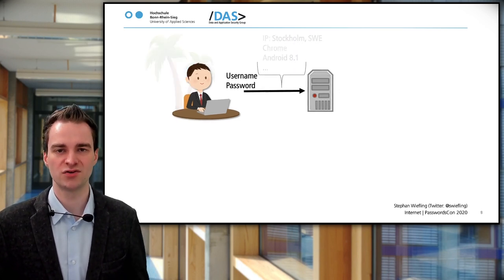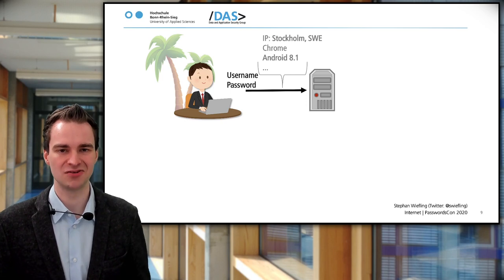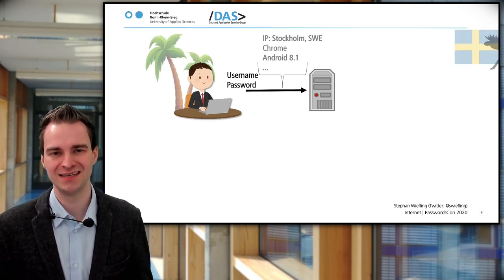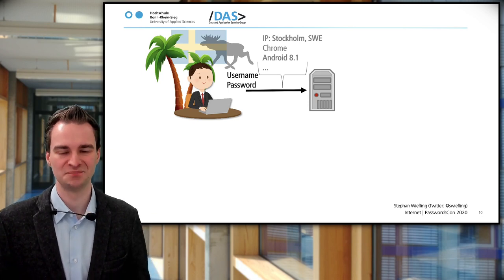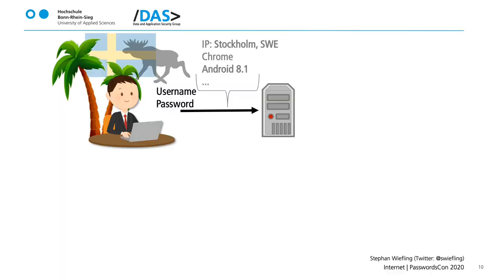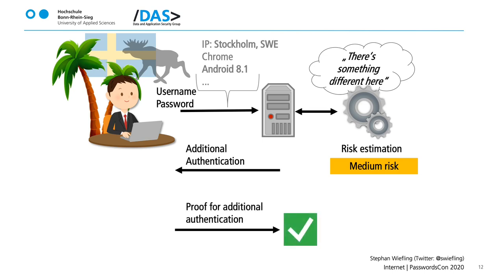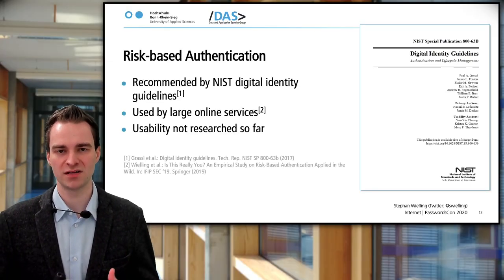But now imagine switching to another location — say Stockholm — and using a device you've never used before. Since this is not normal user behavior, RBA is not quite sure. It asks: is it really Stefan Wiefling trying to sign in? So it asks for an additional authentication factor to prove that it's really you. In most cases, this is like an email with a six-digit code that you enter on the website. If that proof is correct, you get signed in.